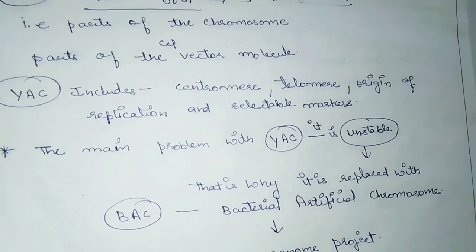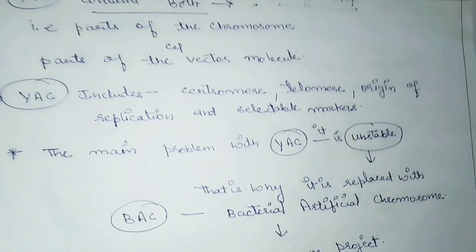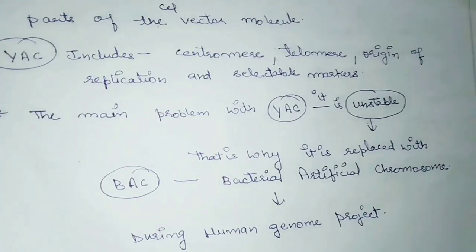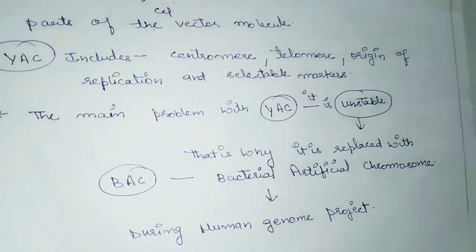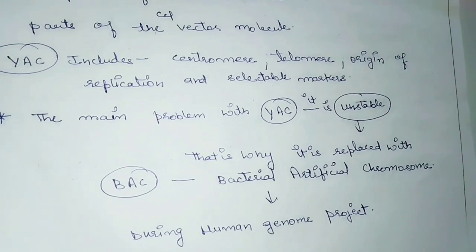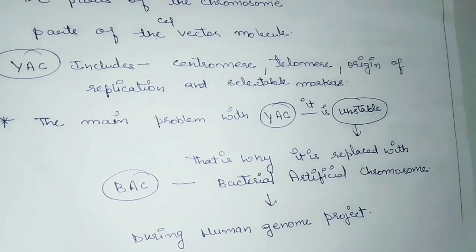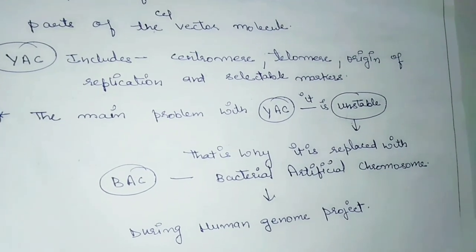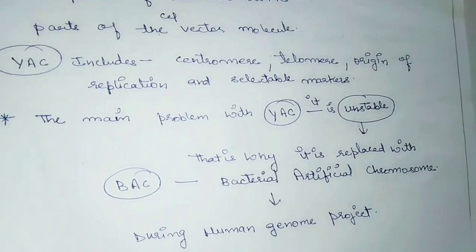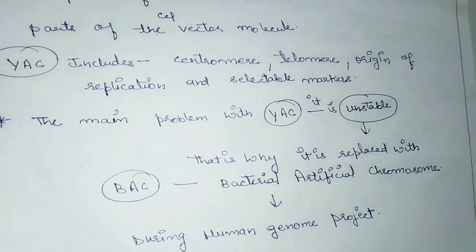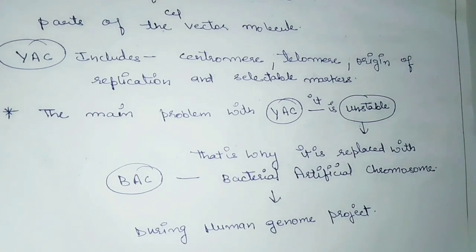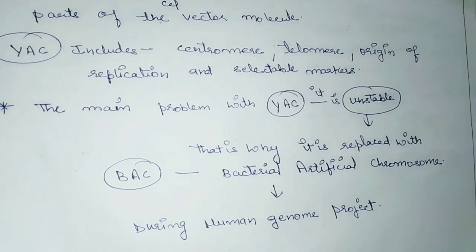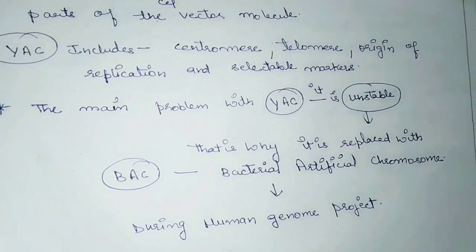The main problem with YAC is that it is unstable. This is one of the biggest disadvantages of YAC, and that is why it was replaced with BAC — the Bacterial Artificial Chromosome, which is the second type of artificial chromosome. BAC was used extensively during the Human Genome Project.